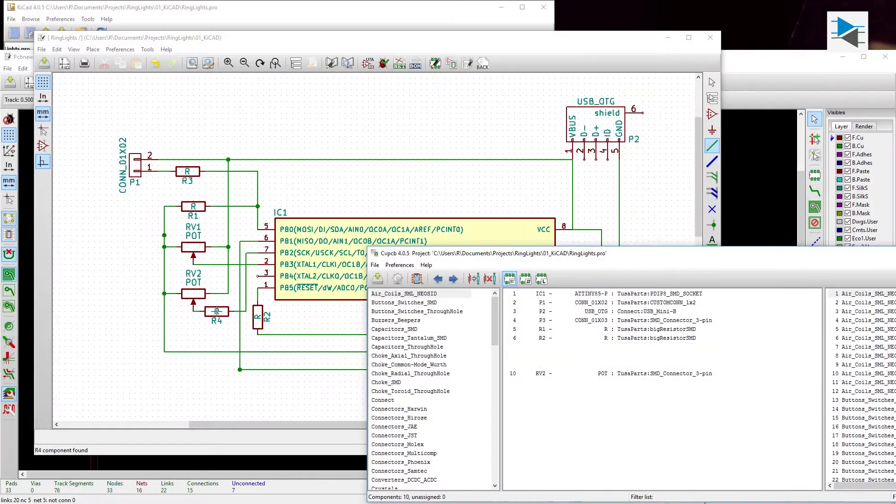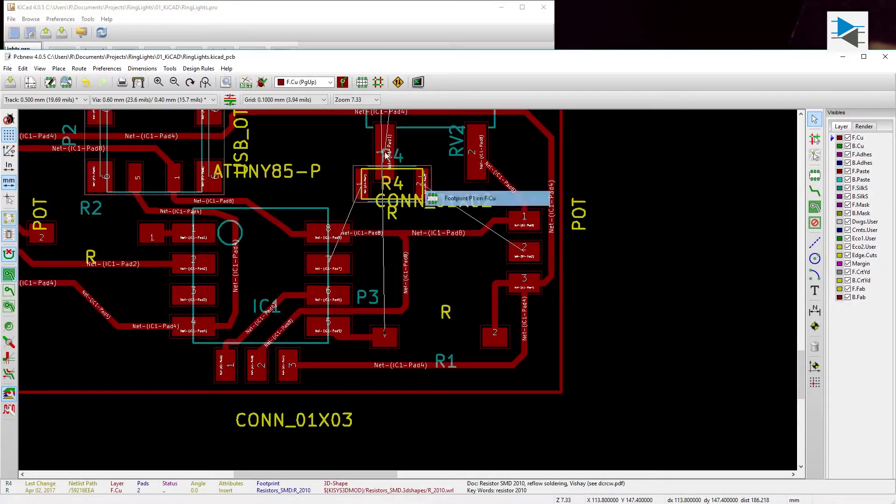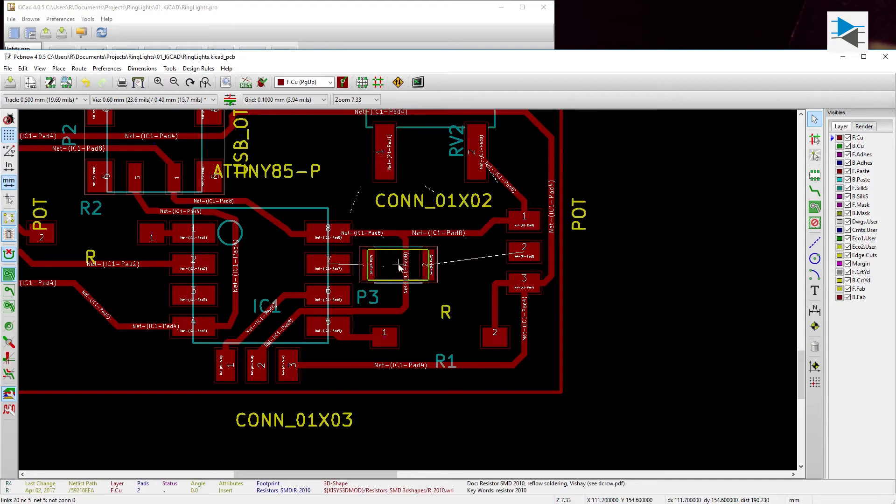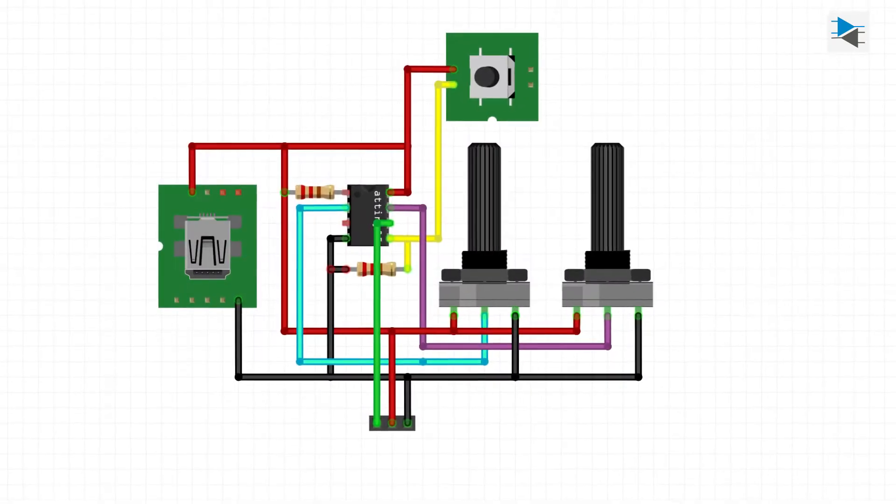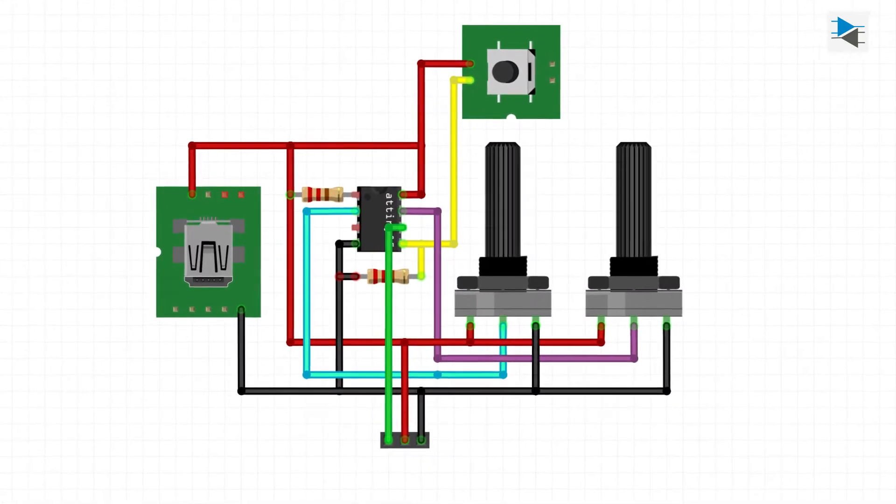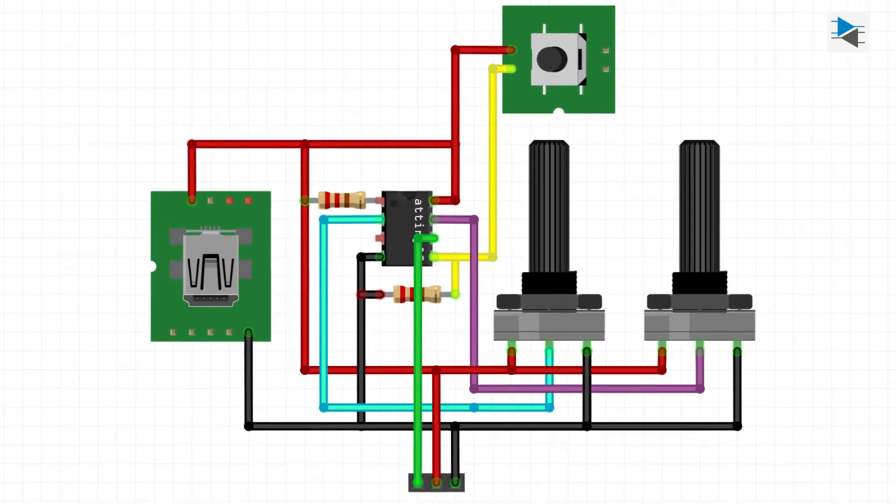The schematic for the control circuitry is fairly straightforward and was designed using KiCad, a free and open source EDA with fairly powerful features. It consists of the ATtiny itself, two potentiometers, a tactile switch with pull-down resistor, and a pull-up resistor for the reset pin.